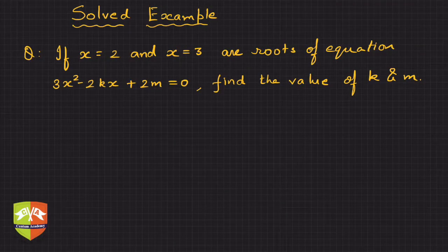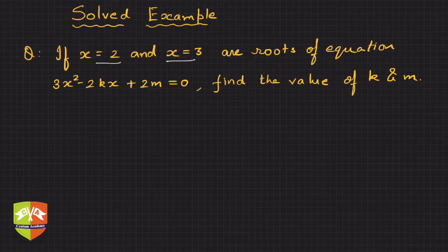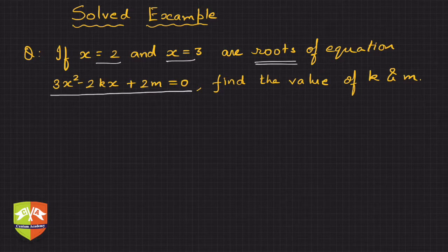Okay, so in this question it's given that if x equals 2 and x equals 3 are roots of equation 3x² - 2kx + 2m = 0, we have to find out the value of k and m.